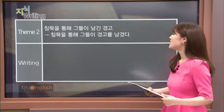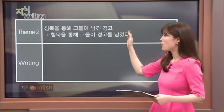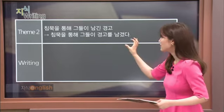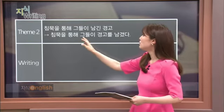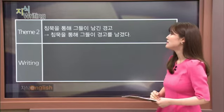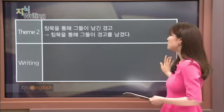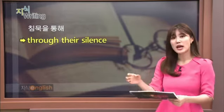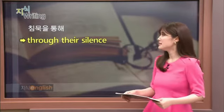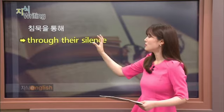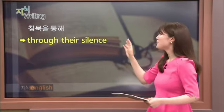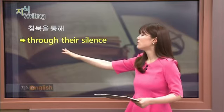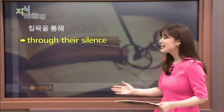Let's take a look at the second sentence. The second theme is: 침묵을 통해 그들이 남긴 경고. Since this isn't a complete sentence, we'll change it slightly: 침묵을 통해 그들이 경고를 남겼다. Let's translate it. '침묵을 통해' — silence is 'silence,' and 'through' gives us 'through silence.' However, in English possessives are often needed — whose silence is it? It's the antelopes' silence. So the most natural English is 'through their silence.'